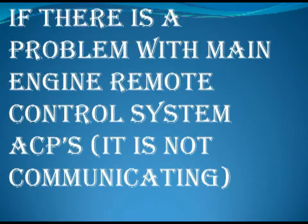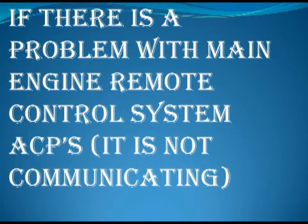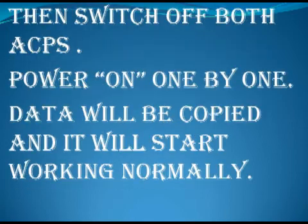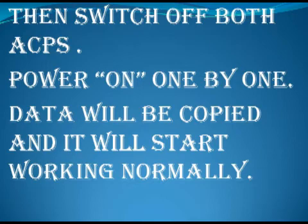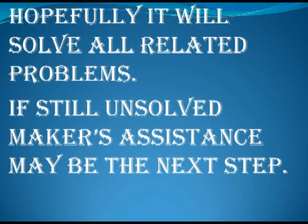If there is a problem with the main engine remote control system ACP — not communicating or having gone to configuration mode — then switch off both ACP units and power them on one by one. Data will be copied and the system will start working normally. Hopefully this will solve all related problems.